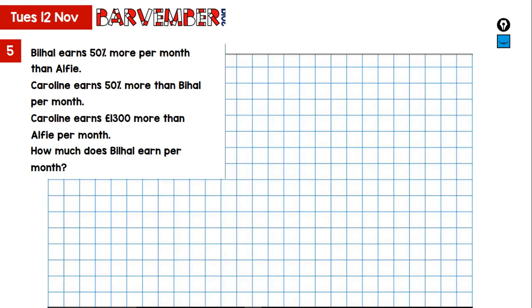The Barvember bar modeling question for Tuesday, 12th of November. Bilal earns 50% more per month than Alfie. Caroline earns 50% more than Bilal per month. I'm going to stick with Bilal here. Caroline earns £1,300 more than Alfie per month. And we are asked, how much does Bilal earn per month?